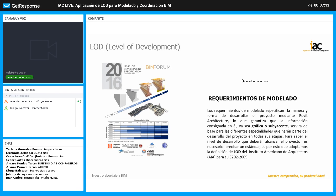Los requerimientos de modelado están asociados a qué es lo que se necesita para el modelo y en qué momento. Estos van a especificar la manera y la forma de desarrollar el proyecto mediante Revit Architecture. La idea es garantizar que toda la información que lleve el proyecto, de manera gráfica o toda la metadata anexa a cada una de las familias y el modelo en general, tenga la información pertinente y sirva de base para cada una de las especialidades.